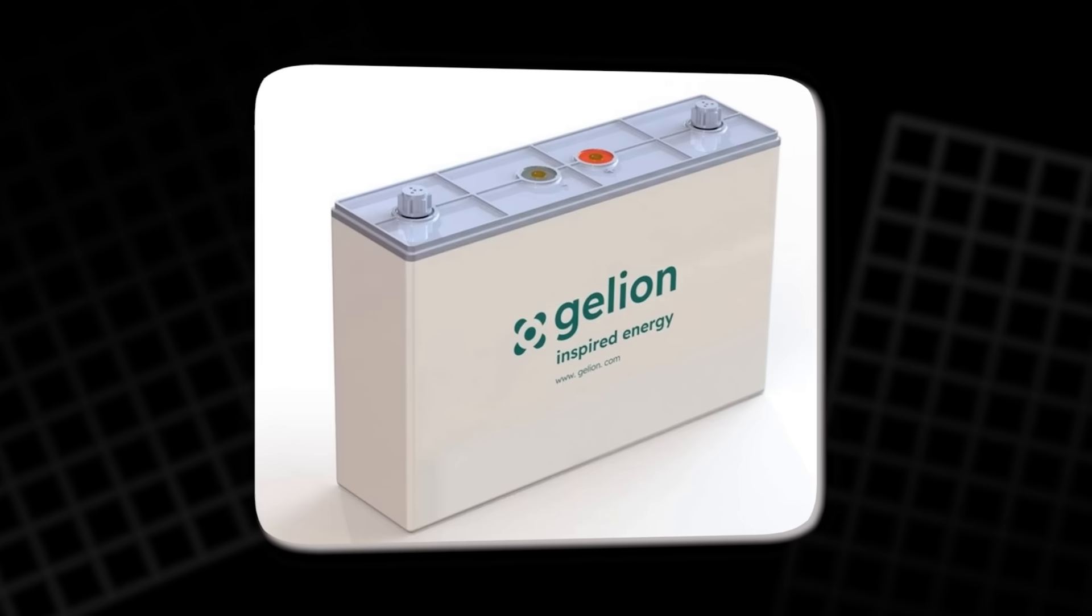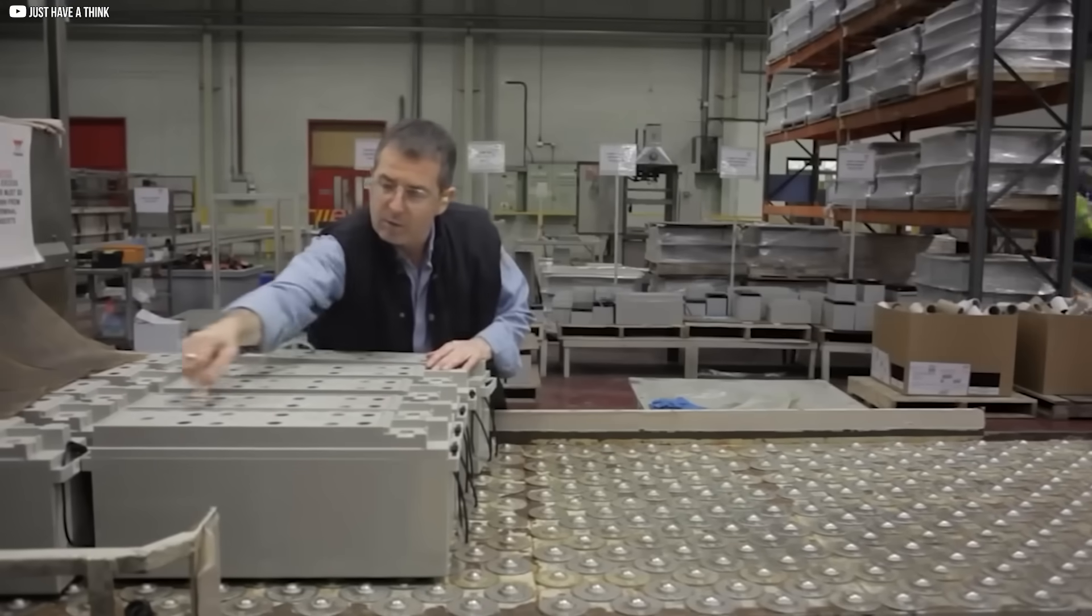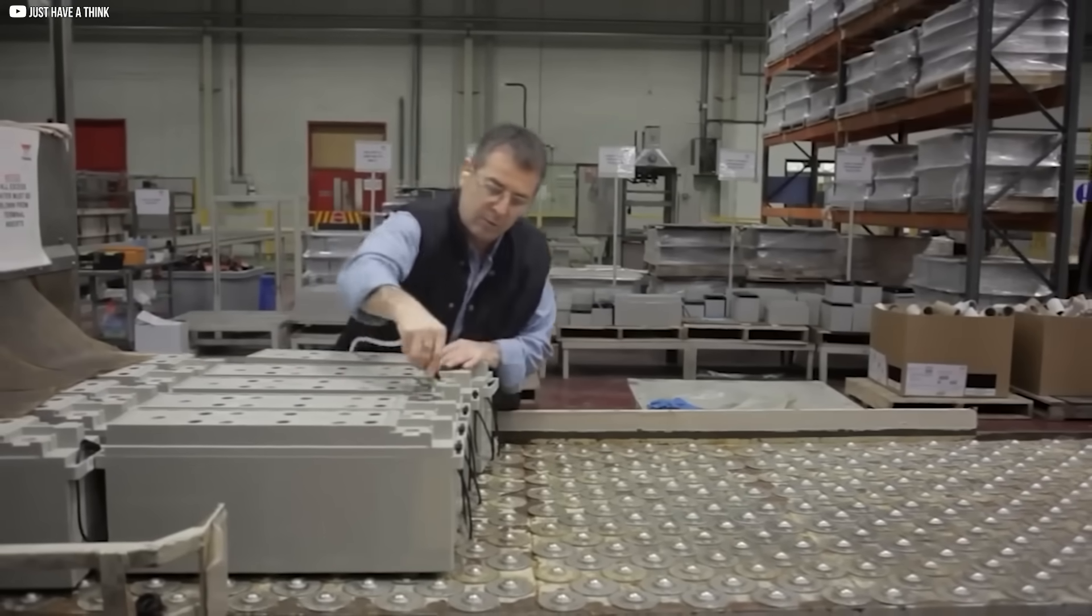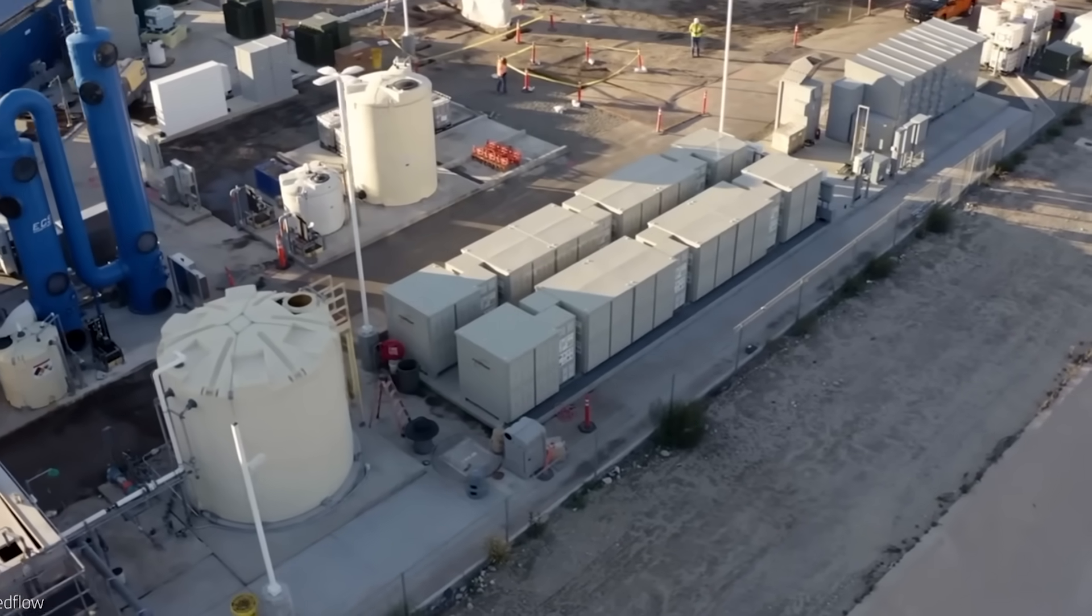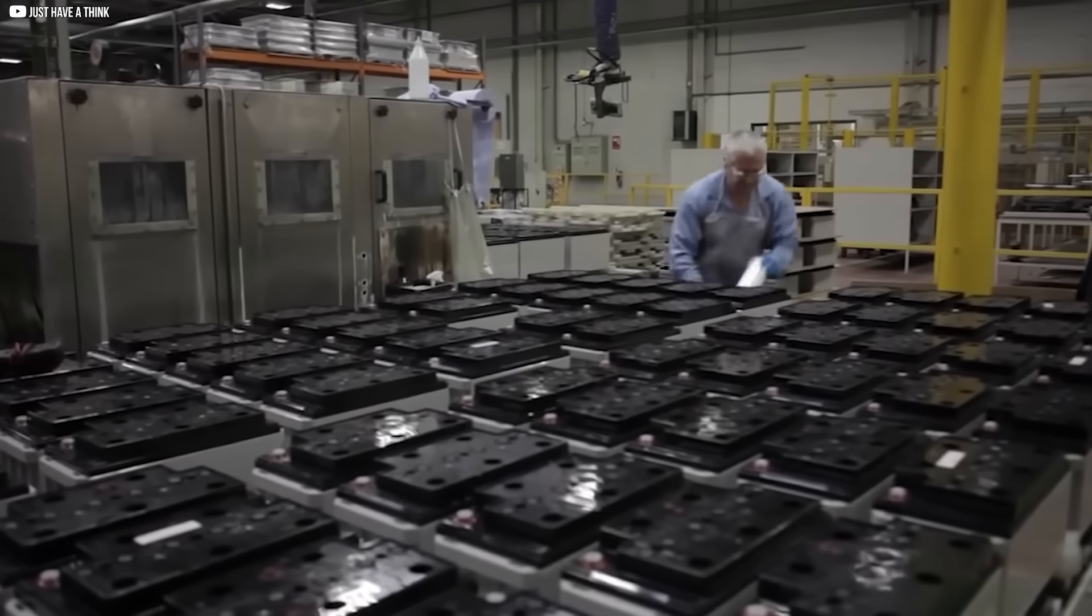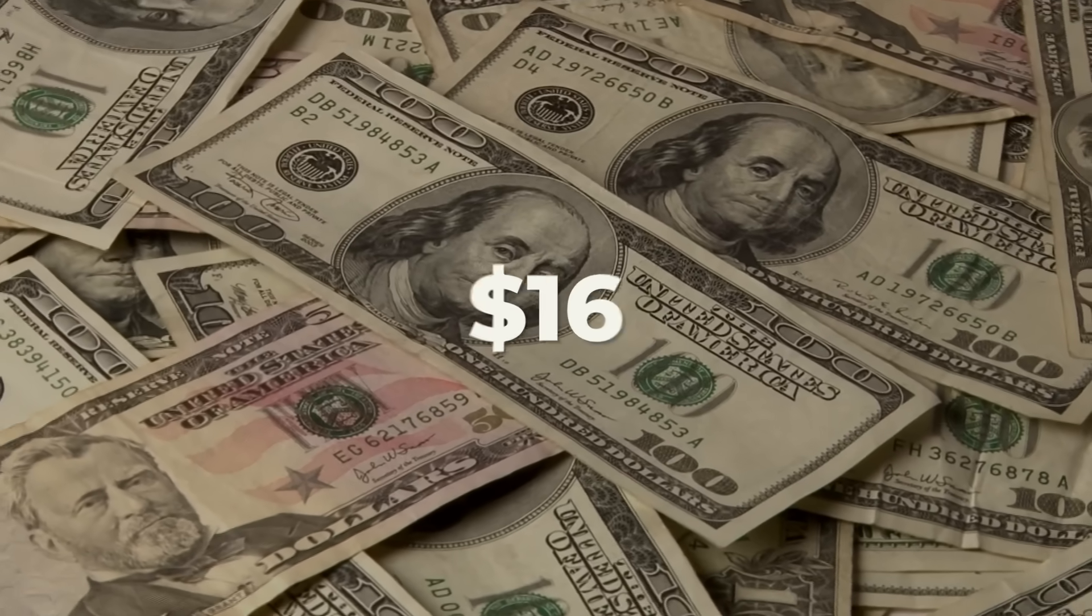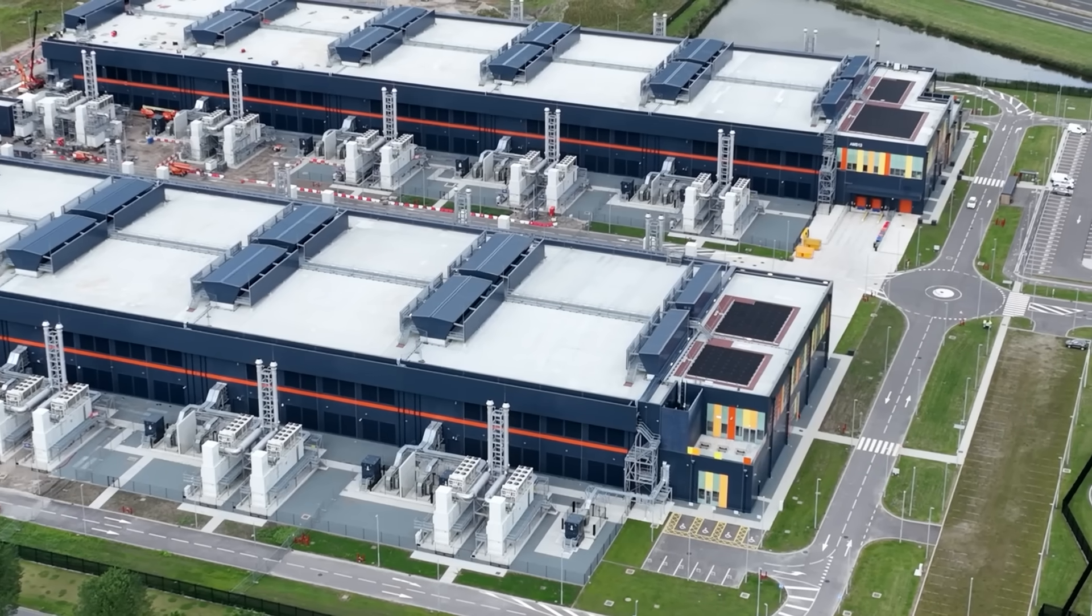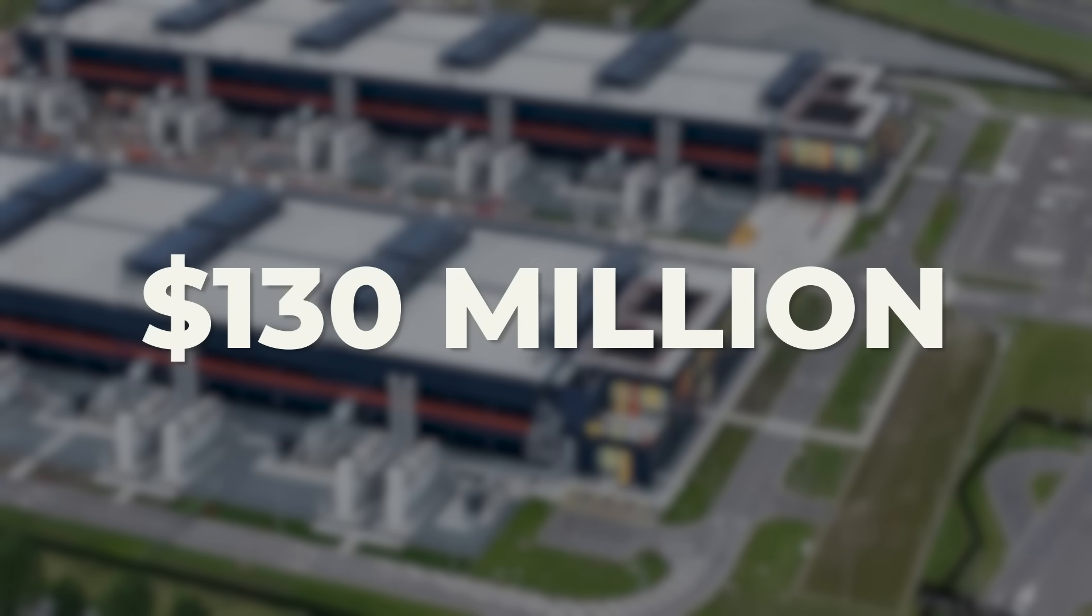Gelion goes a step further. By using the same casing as lead-acid batteries, they avoid building entirely new factories. 82% of Endure's manufacturing steps use existing machinery. The cost to retrofit a lead acid plant for one gigawatt hour per year? Around $16 million. Building a lithium-ion plant of the same scale from scratch? About $130 million.